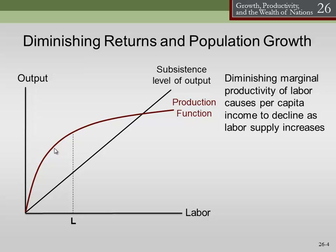By the time we get to adding, say, 30 people behind the counter, they're all squished in there so tight they can't move and nothing happens. There are diminishing returns to any input. As we increase an input beyond a certain level, we find that more isn't necessarily better.